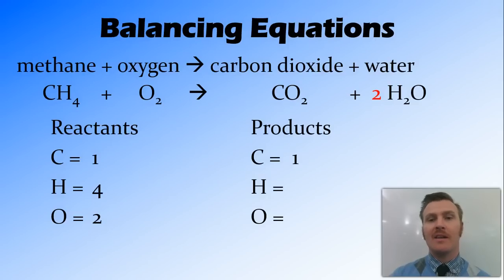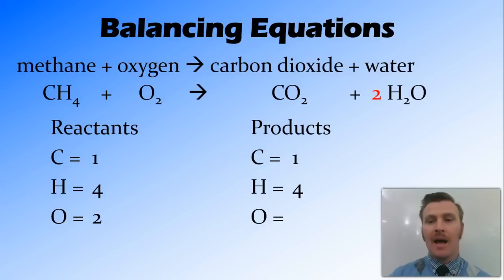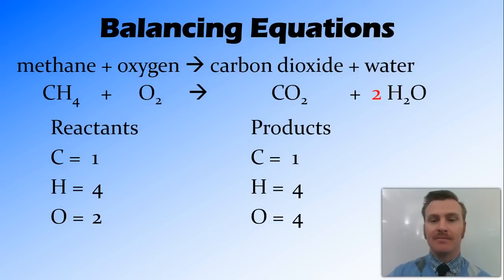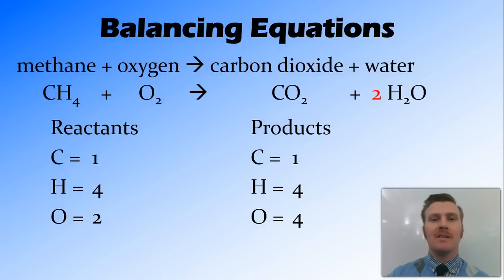On the products side, with two water molecules, carbon in the carbon dioxide stays at one. Hydrogen: each water molecule has two hydrogens and we have two molecules, giving four hydrogen atoms total. For oxygen: the water has one atom of oxygen per molecule, and carbon dioxide has two, so in total we have four oxygen atoms. We're a bit closer to balancing but not quite there yet.